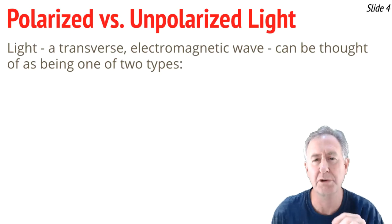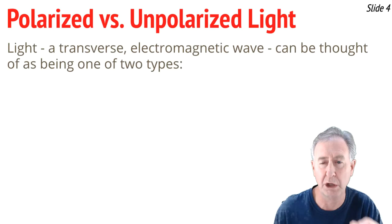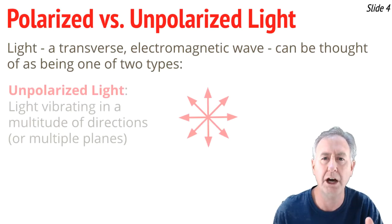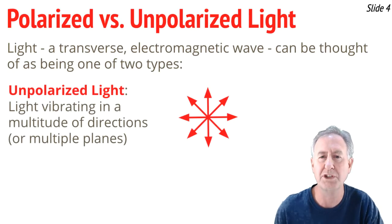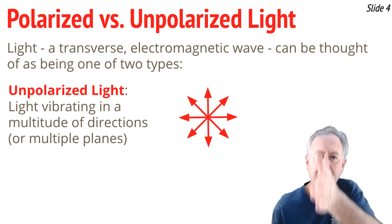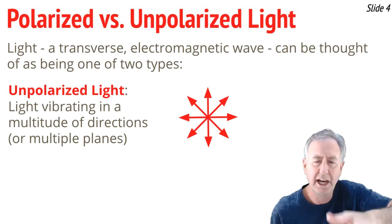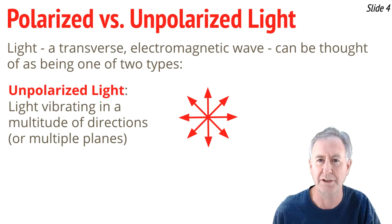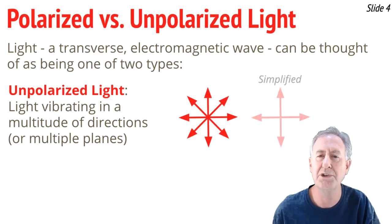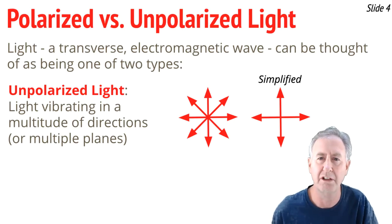In order to understand that demonstration, we have to learn some things about this electromagnetic transverse wave that we call light. We can think of it as being one of two types: either unpolarized light or polarized light. When an unpolarized wave is coming at you, you would see it vibrating up and down, and left and right, and diagonally — it's vibrating in a multitude of planes of vibration. To keep it simple, we'll just say half of the vibrations are up and down, and half of the vibrations are left to right.